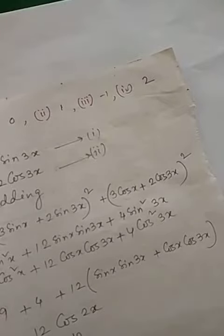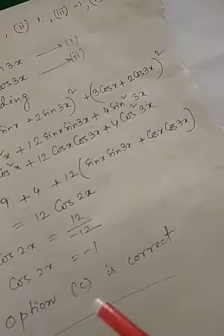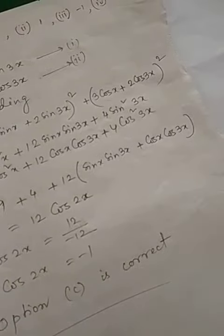From here we are getting cos2x as minus 1. Option c is the correct answer.